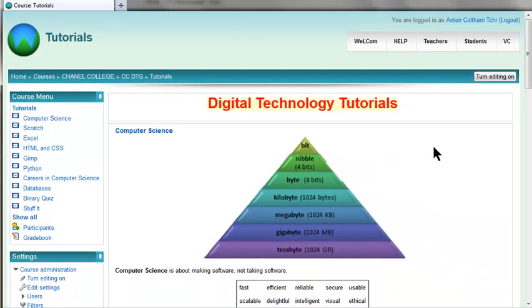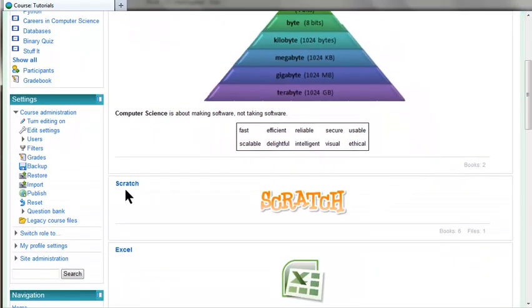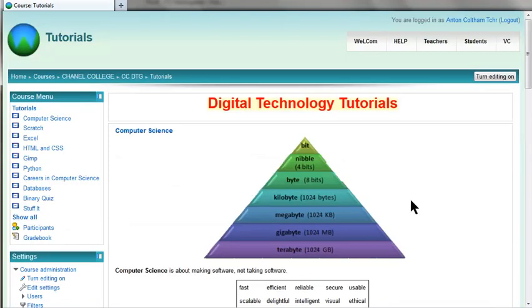So with the editing off, we can see what the students see. They just see the title, the image, and a little summary. And then the course menu allows them to get to any topic.